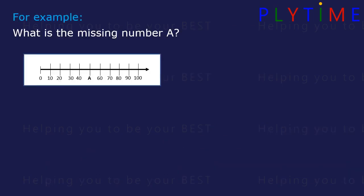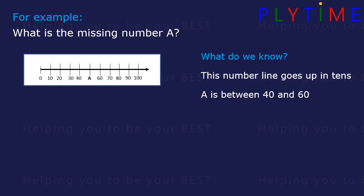What's the missing number A on this number line? What do we know? We know the number line goes up in tens: 10, 20, 30. And A is between 40 and 60. Let's count up in tens from 40: 40, 50. A equals 50. So 40 plus another 10 equals 50.